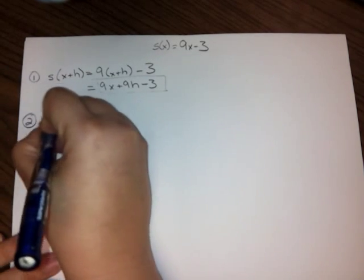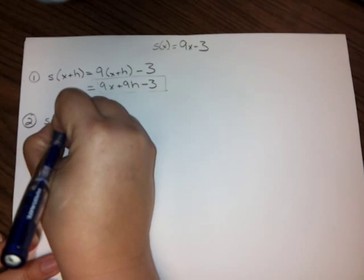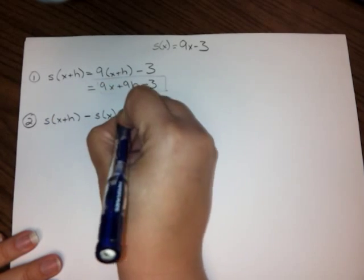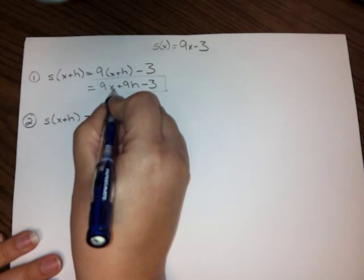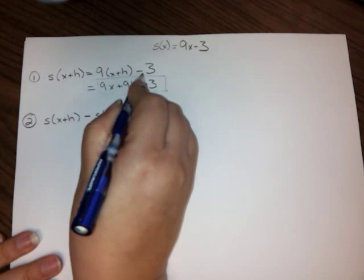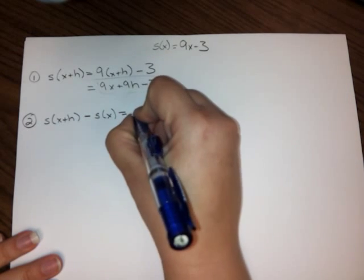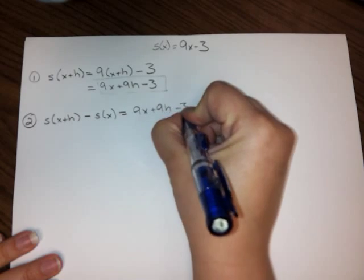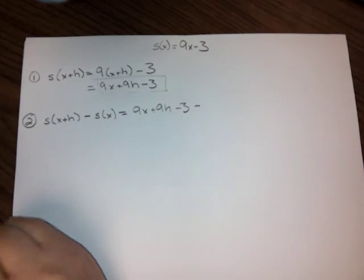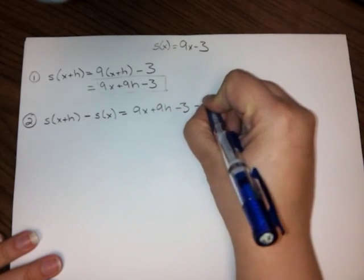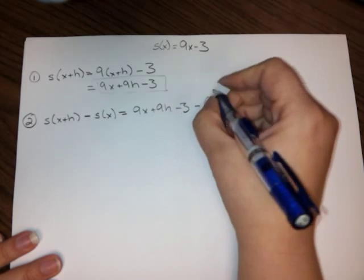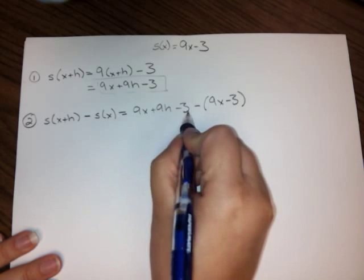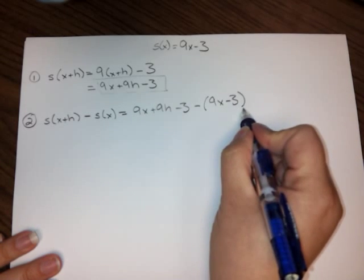Step 2 says to find s(x + h) - s(x). So I'm just going to take exactly what I had here. That's my s(x + h). I already found that. And then subtract the original function from it. So I get 9x + 9h - 3, then minus the original function. Make sure you put it in parentheses. This minus sign has to distribute. So I get 9x - 3. So this is s(x + h) - s(x).